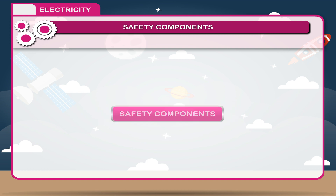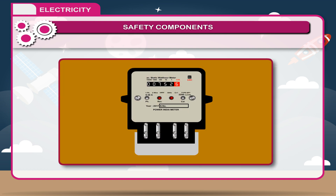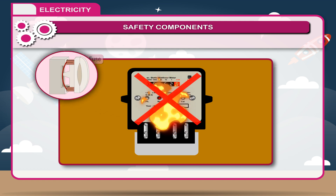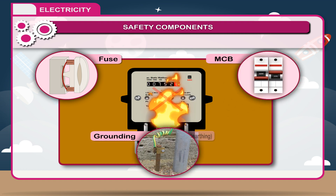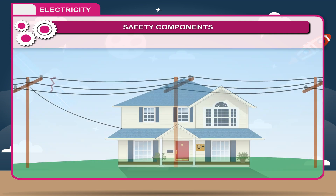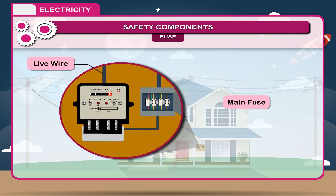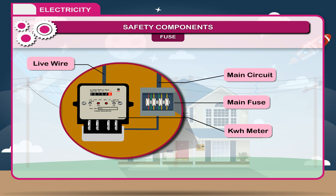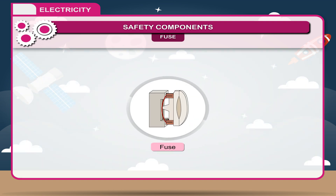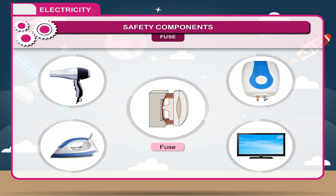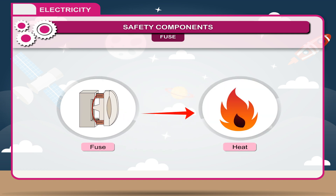Safety Components: In order to protect circuits against damage due to overheating or short-circuiting, safety measures are taken such as fuse, MCB, and grounding/earthing. A main fuse is connected in the live wire after the kilowatt-hour meter and before the main circuit, which protects the circuit when it gets overloaded or short-circuited. A fuse is also connected with each electrical appliance to safeguard it from excessive current. A fuse works on the heating effect of current.